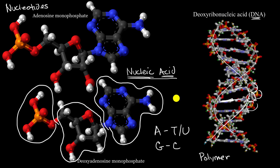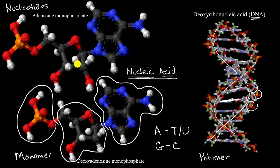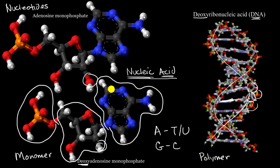For the sake of this video, just appreciate that the monomer for a nucleic acid like DNA is a nucleotide. The analogous nucleotide in RNA, which stands for ribonucleic acid, would be adenosine monophosphate. You can see the difference between the two: we have an oxygen right over here in RNA, and we don't have an oxygen right over here in DNA. That's why this is called deoxy, and that's why it's deoxyribonucleic acid — you're missing one of those oxygens on your five-carbon sugar.